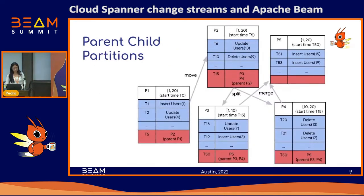Next we're going to cover change stream partitions and the parent-child relationships. A user can think of a change stream partition as a logical container that tracks data changes for an immutable key range. Looking at partition 1 on the left part of the screen, partition 1 tracks key ranges 1 through 20 and it has a start time at t0. The body of the partition describes the data changes that occur from t0 onwards for key ranges 1 through 20 — at t1, row 1 is inserted into users; at t2, you update row 4 in users; and so on until t5.